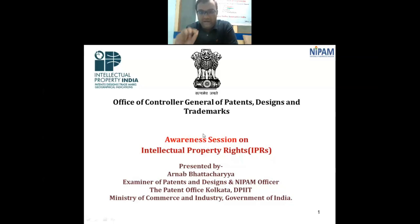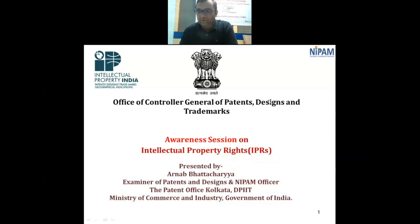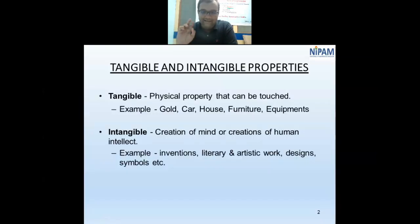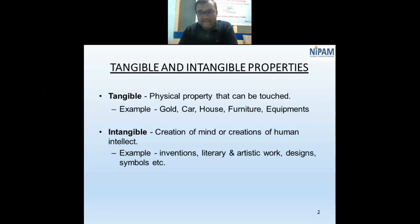The word 'intellectual' refers to anything coming from our intellect — our brain. Any ideas or thought processes generated in our mind are called intellectual things. Properties are broadly classified into two types: tangible properties, which are physical things like gold, cars, houses, and furniture that we can touch; and intangible properties, which are non-physical, like inventions and literary or artistic works. Intellectual property is a type of intangible property.